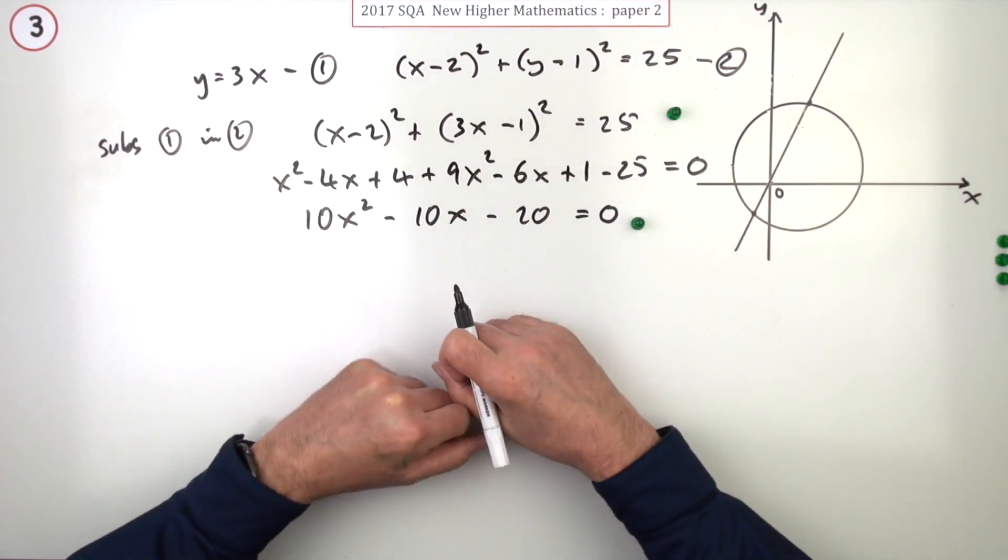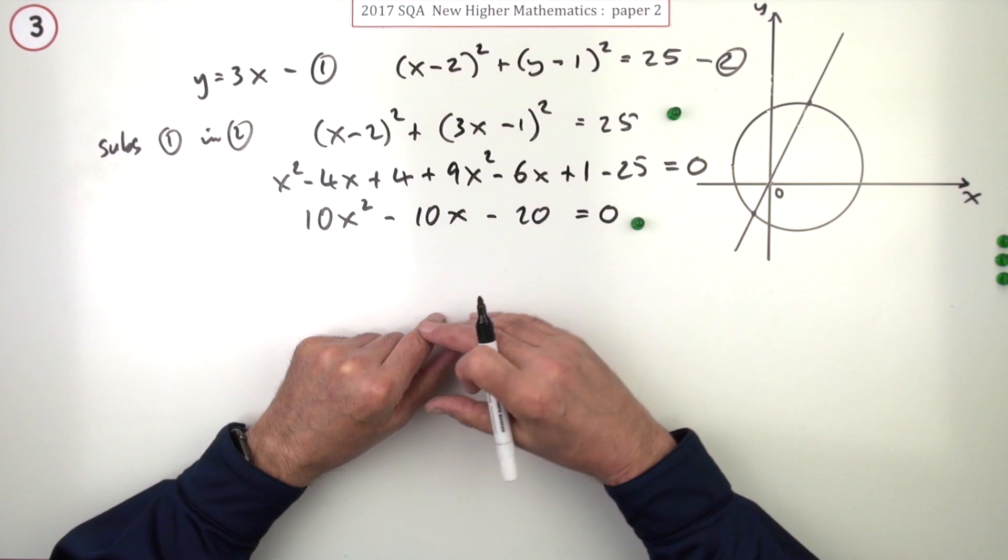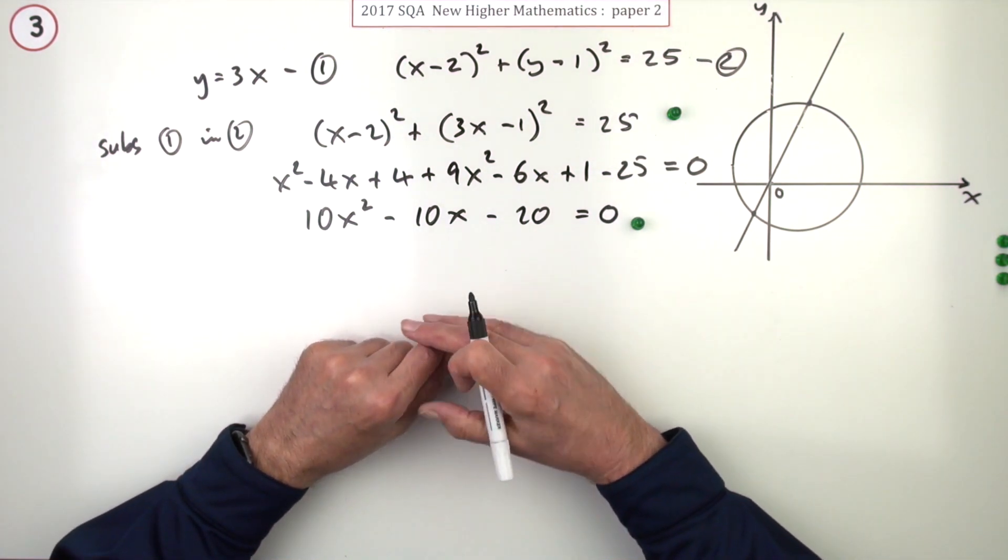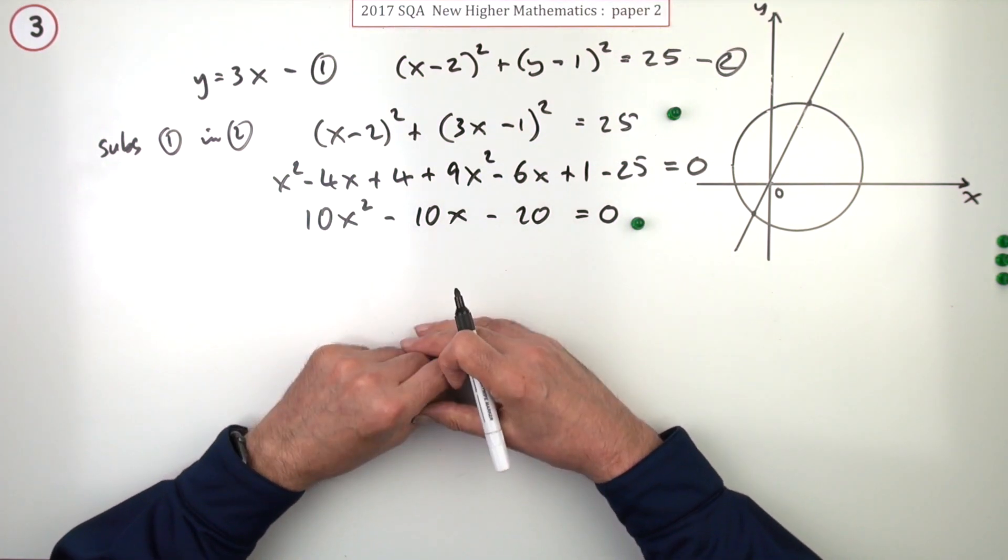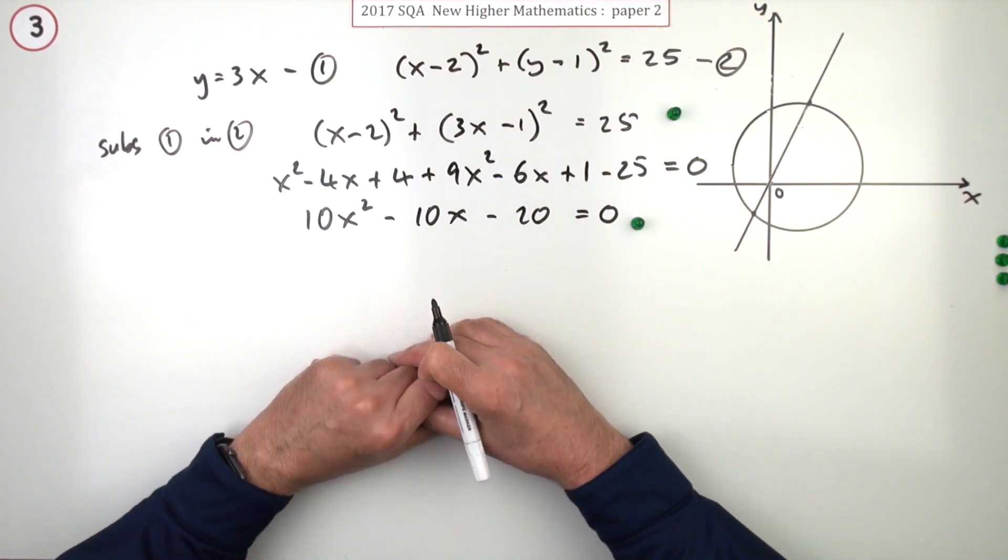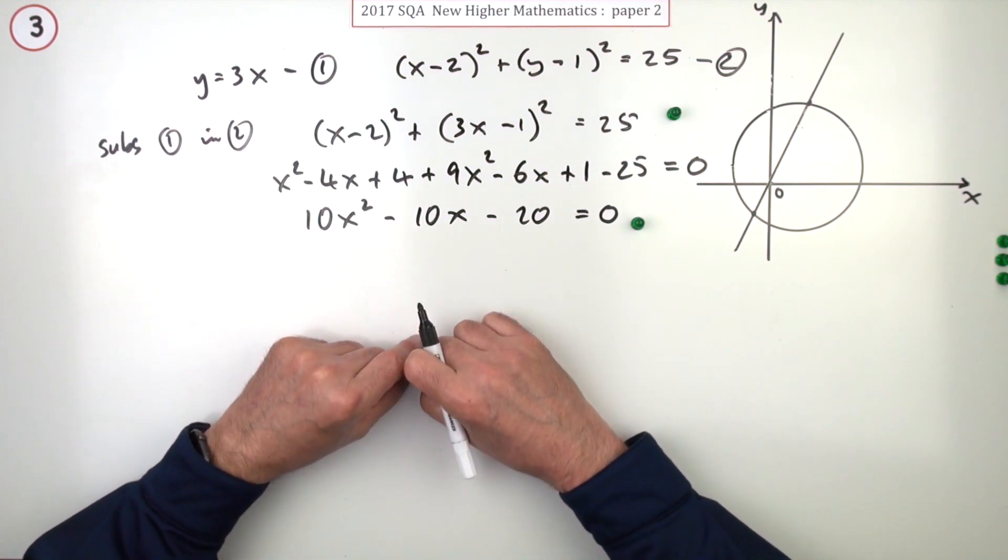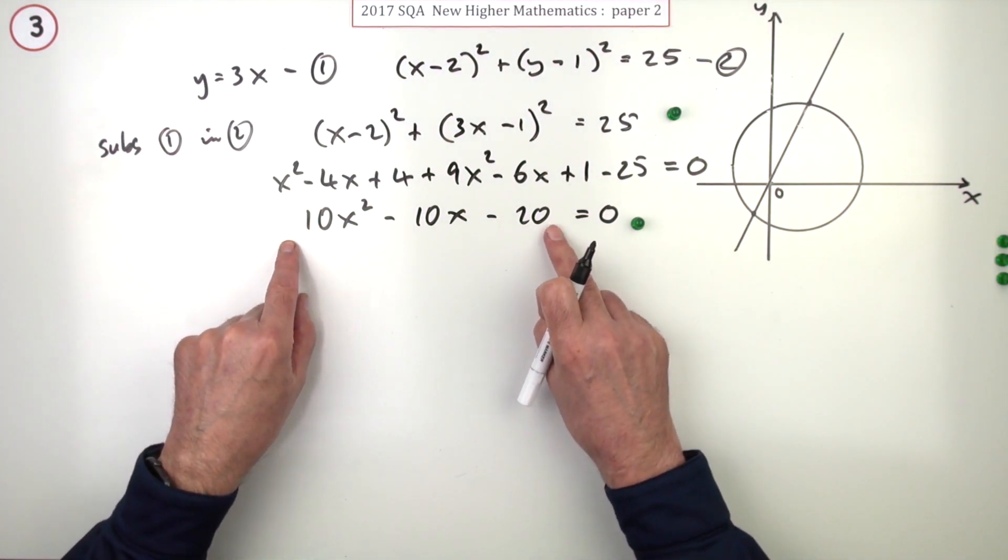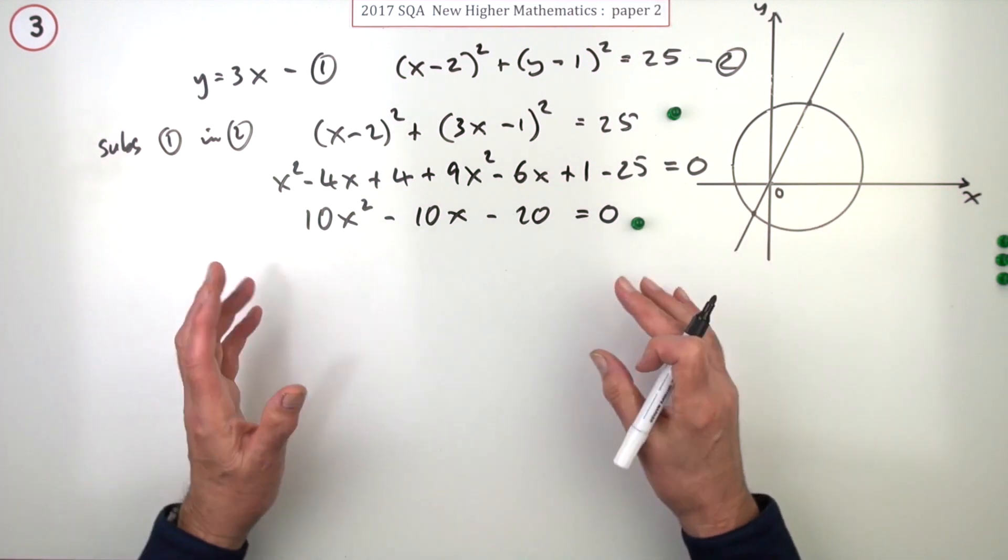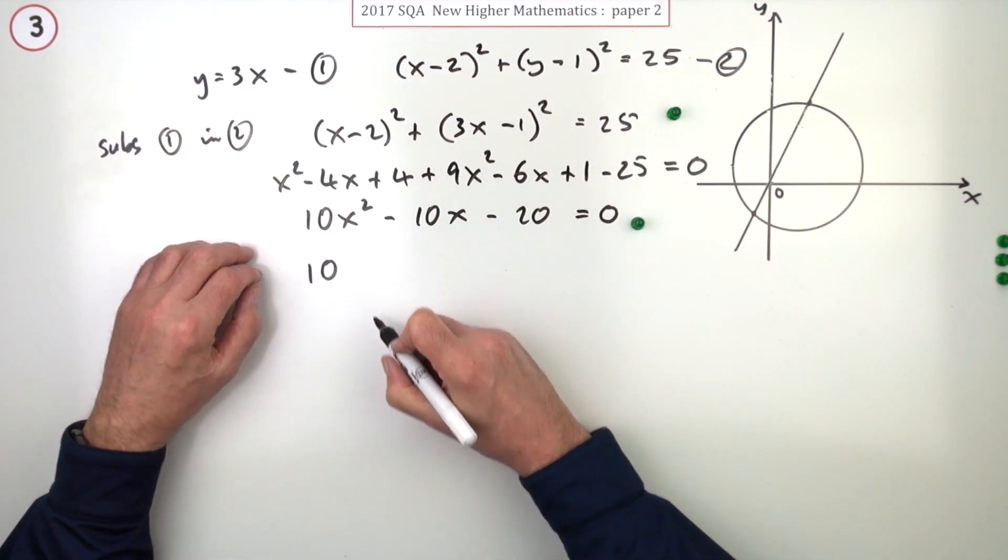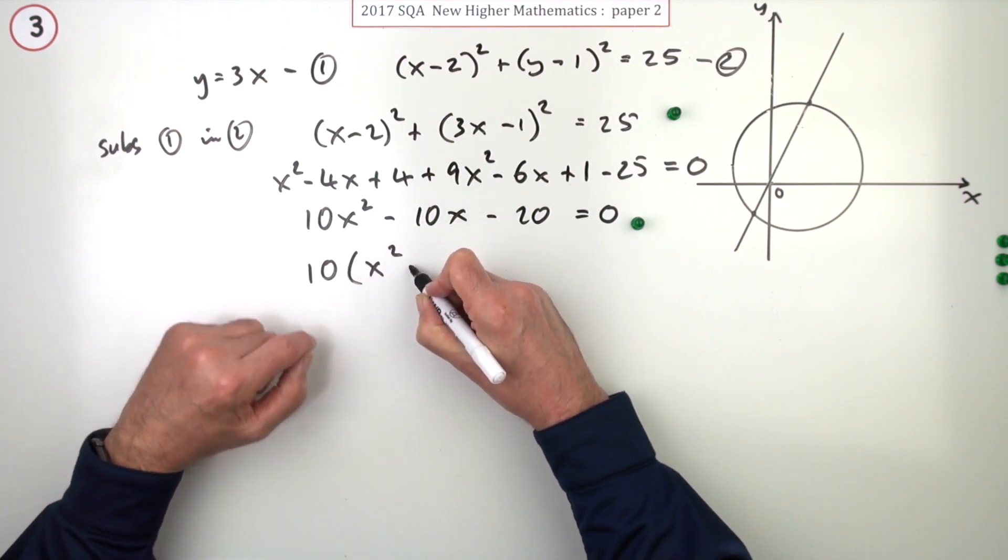Of course you can divide by 10. In the marking scheme it says 'do not penalize candidates who have divided by 10,' as if there's something wrong with that. I have no idea why they say that. There are cases where you'd want to maintain that factor.